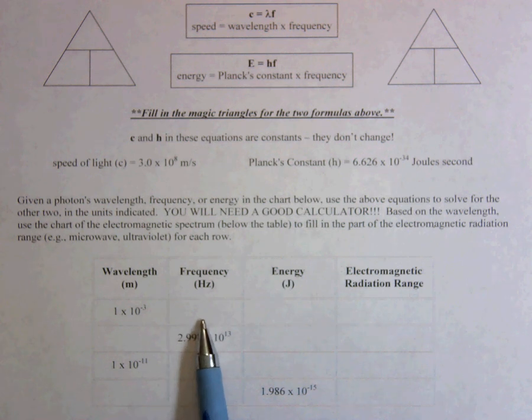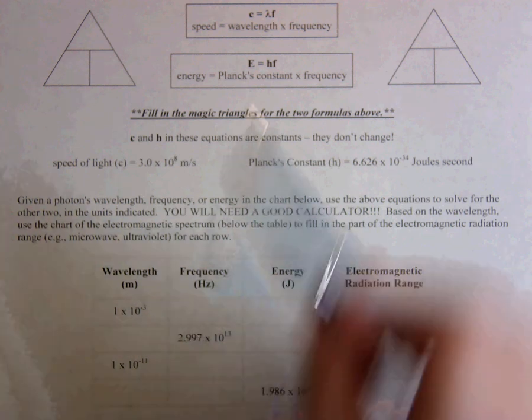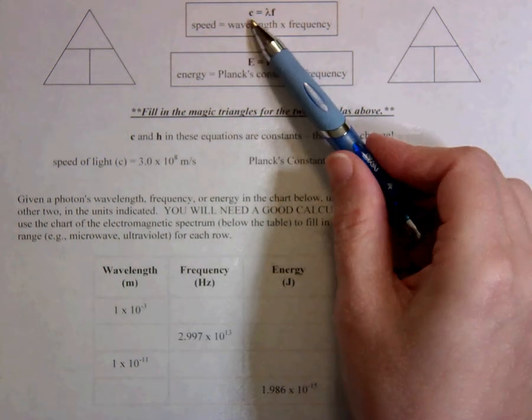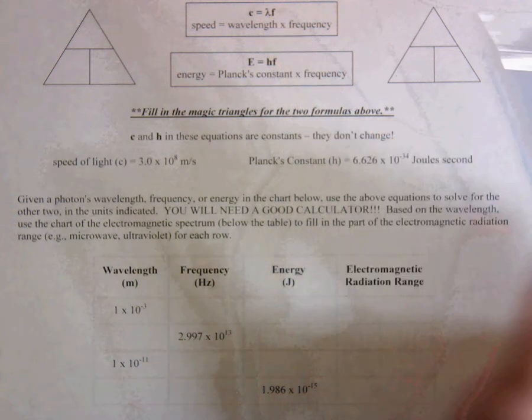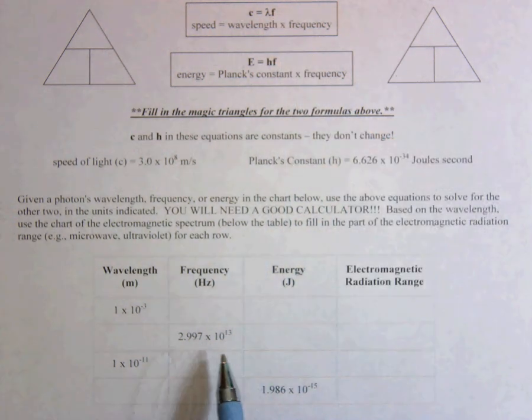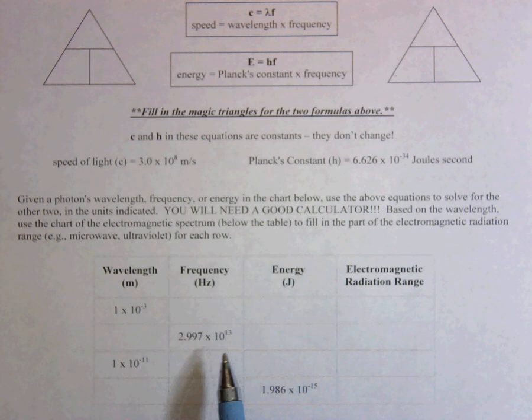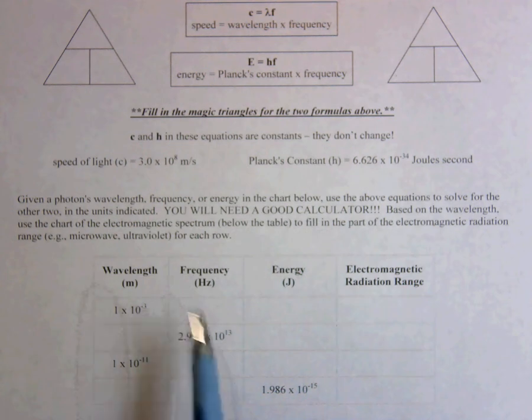Now, in the last worksheet that you did, you've already practiced doing this. When you needed to solve for frequency, you took the speed of light and divided by the wavelength to solve for frequency. You're going to do the same thing here. Make sure that whatever you're dividing by, you put in parentheses so the calculator does it in the correct order. So you're going to solve for frequency.